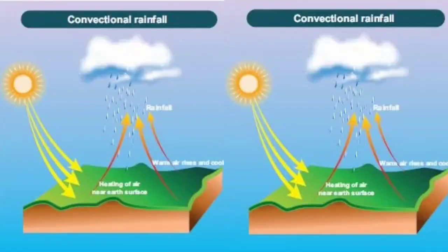This type of rainfall is normally seen in the equatorial and tropical regions of the world. In the equatorial region, during the daytime, due to high temperature, evaporation is high and convection currents develop in the atmosphere, leading to the vertical ascent of hot and humid air. In the afternoon, clouds form and rainfall takes place.